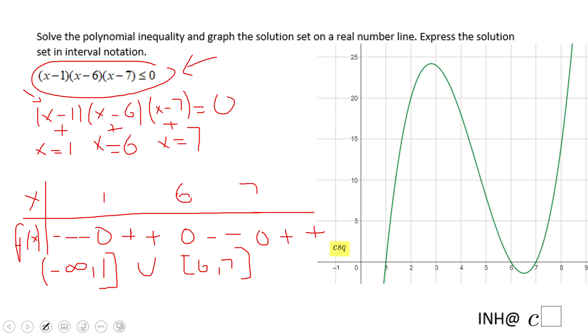You can see the same thing in a graphical approach. Yes, the graph is under the x-axis here until you reach x equals one and then in this interval right here between six and seven.